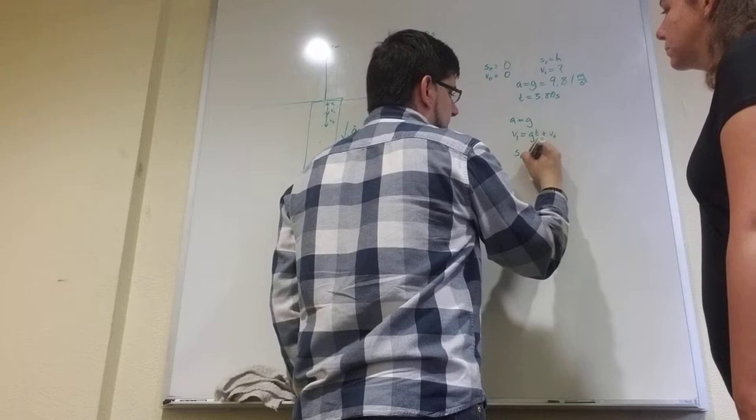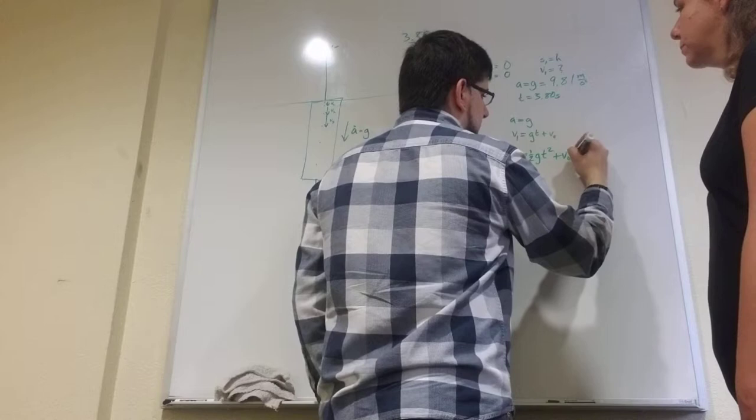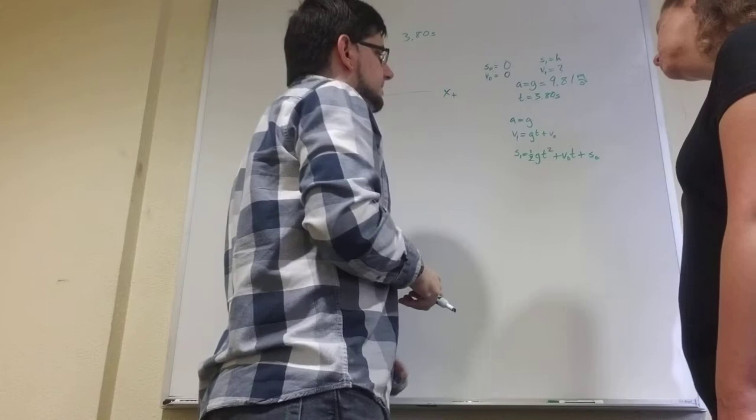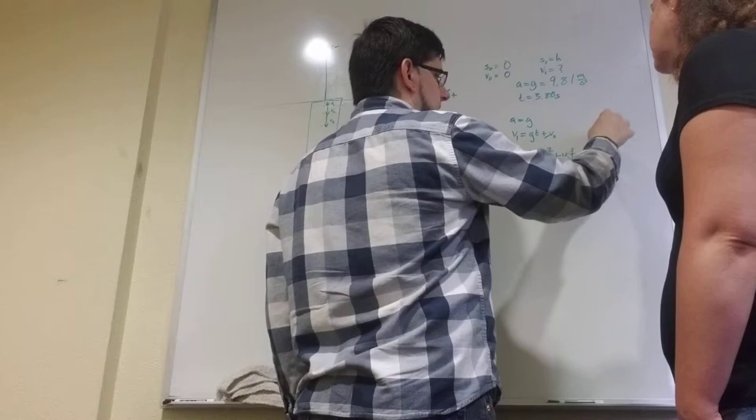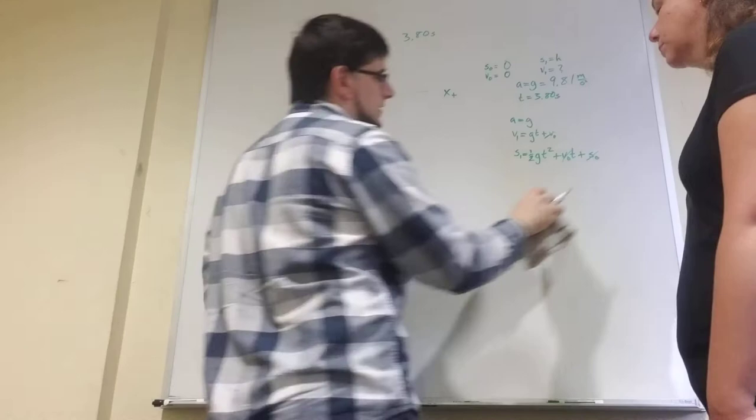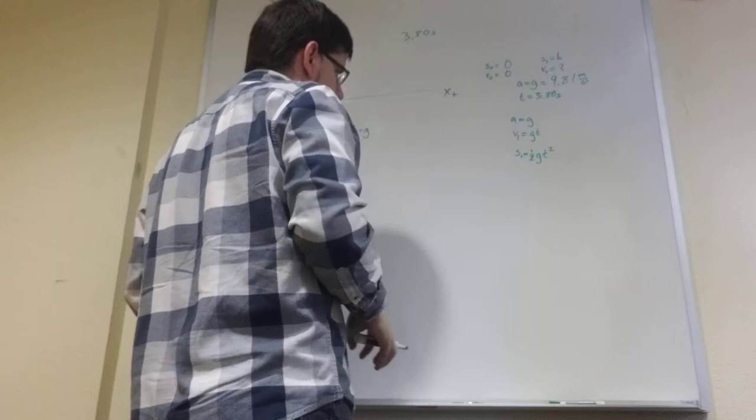So, taking the integral again, you get 1 half G T squared plus V naught T plus S naught. Okay? Now, we know that V naught and S naught are zero. So, what happens when you add zero? It's meaningless. You just get rid of it. So, instead, you wind up with just these equations.